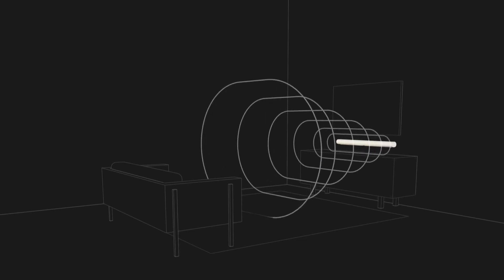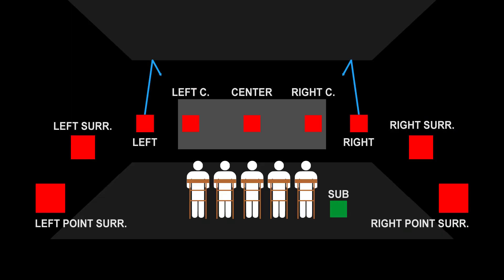Dolby Atmos and DTS:X are object-based audio codecs — the most immersive surround sound signal you can create at home. You can hear things above you from upward-firing or ceiling speakers, and from behind, the sides, and the front. Now, HDMI ARC cannot send DTS:X — I couldn't find anything confirming it supports DTS:X, and you don't get object-based audio codecs with DTS. But with Dolby Atmos, you can.